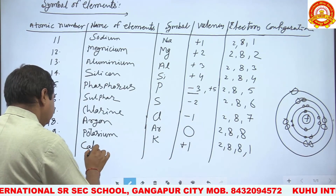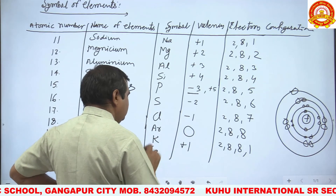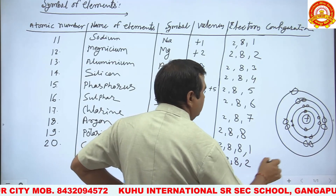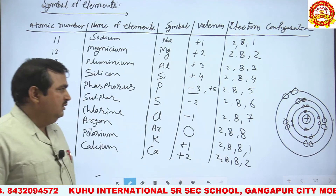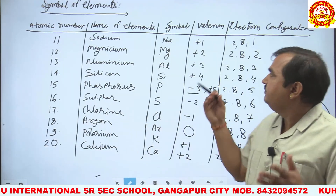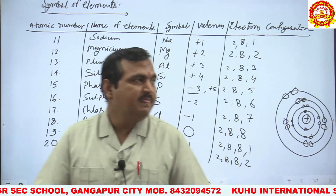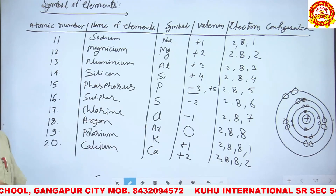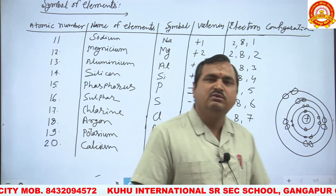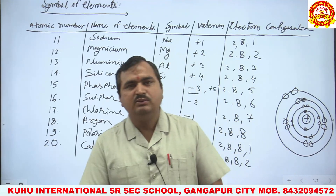Number 20: Calcium, symbol Ca, electron configuration 2, 8, 8, 2. In this video, I have covered elements 1 to 20 — symbols of elements, valency of elements, and electron configuration. Study this completely in serial order. Next we will discuss more elements and then formation of formulas. That's all for today's video. Thank you very much.